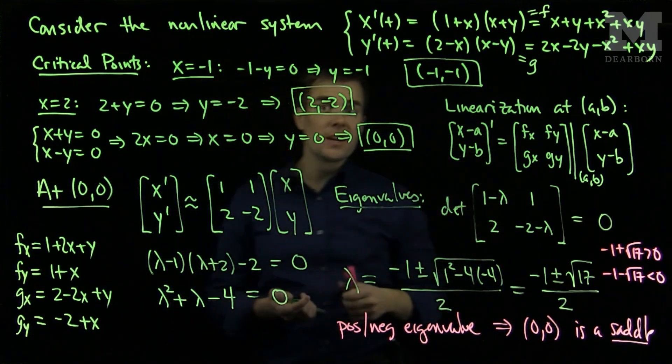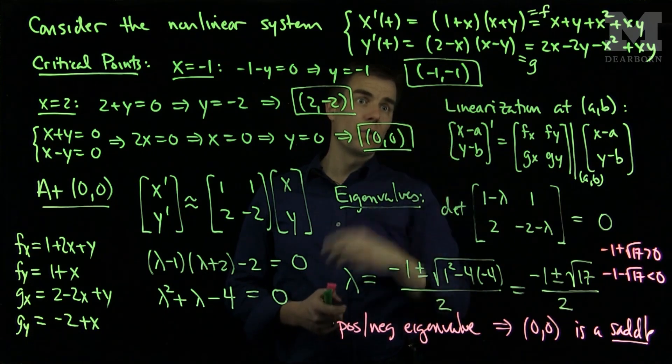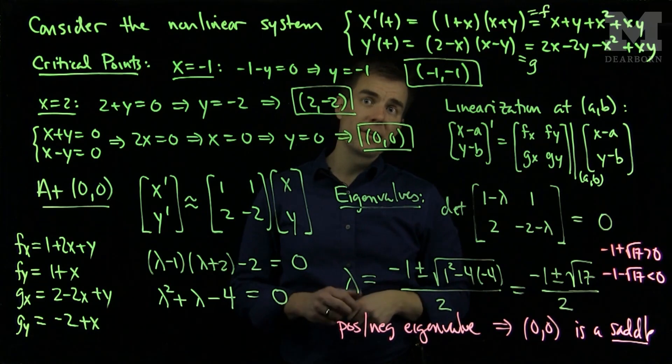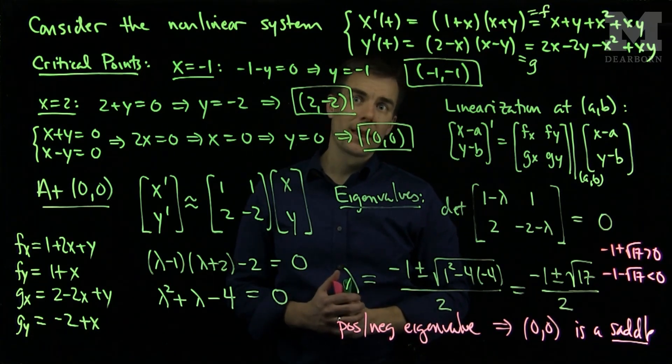I can proceed in the exact same fashion to classify the critical points negative 1, negative 1, and 2, negative 2 by computing the linearization and finding the eigenvalues of linearization. Thank you very much.